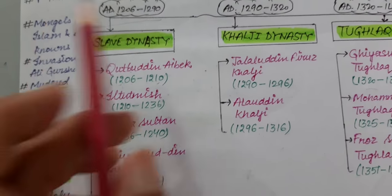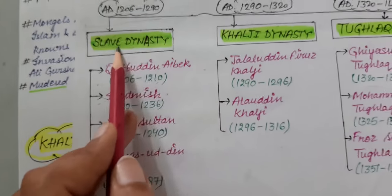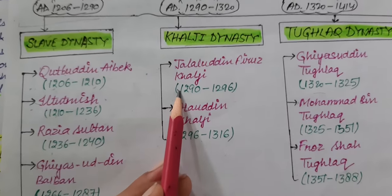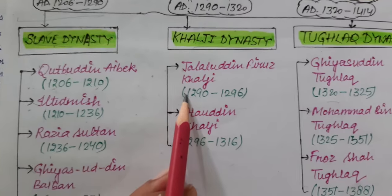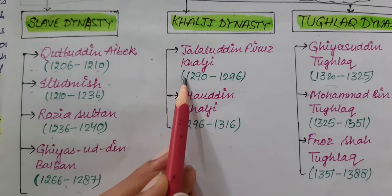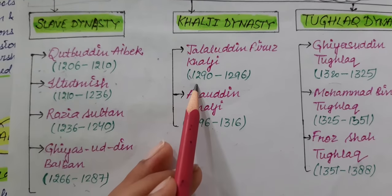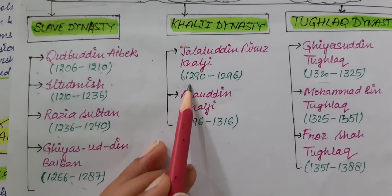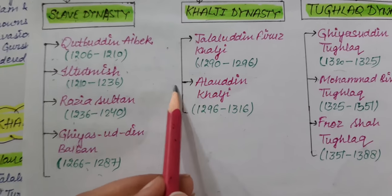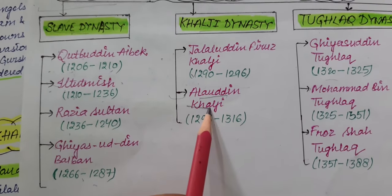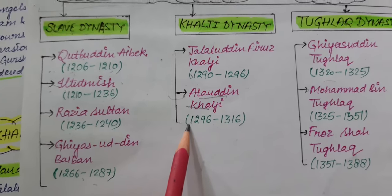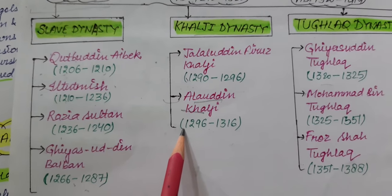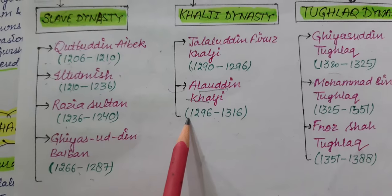From here the Slave Dynasty ended. The next dynasty was the Khalji Dynasty. The first ruler who founded the Khalji Dynasty was Jalaluddin Firoz Khalji, who ruled from 1290 to 1296 AD. The next ruler was Alauddin Khalji.